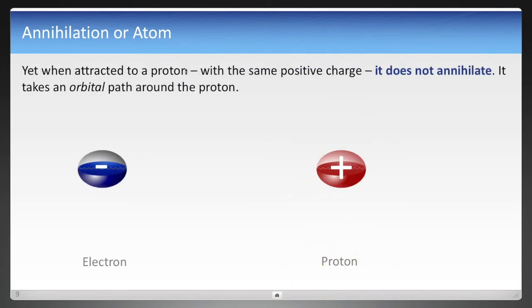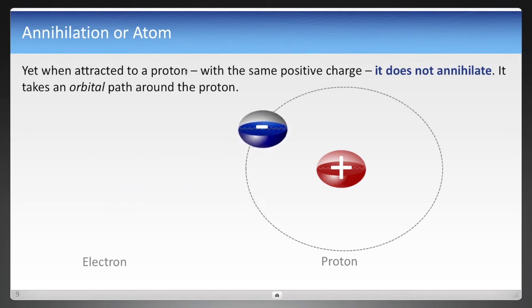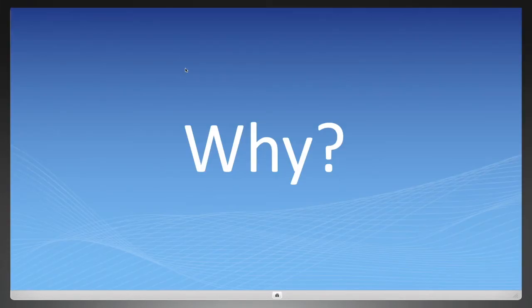But here's a proton, the exact same charge as the positron, and the electron doesn't annihilate with it. It is also attracted to a proton, but now it does something different. It takes a path around a proton. Why? Two particles, identical charge, and an electron does two very different things.